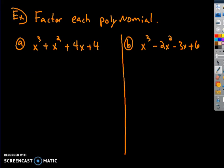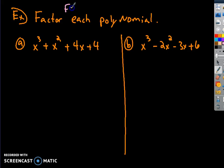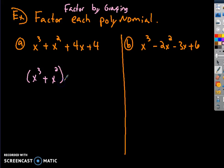Now let's talk about another technique. When factoring polynomials with four or more terms, the first thing you should try is factoring by grouping. You take the first pair and group them together, then the second pair and group them together. Sometimes you may have to rearrange the terms, but in this case we'll leave them as they are.